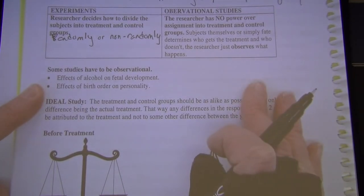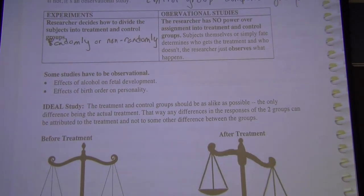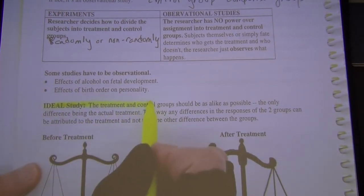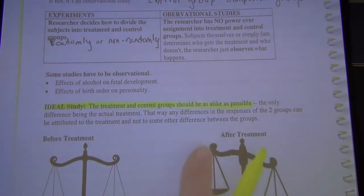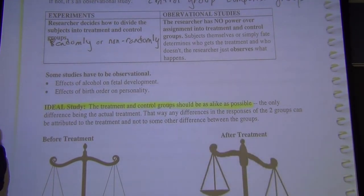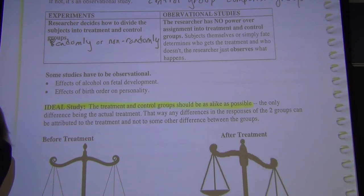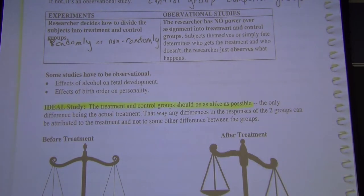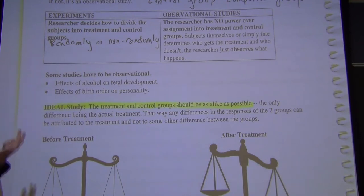The main idea of the ideal study: you want the treatment and control groups to be as alike as possible — ideally identical twins or clones. If we all had a clone, one in the in-person class and one in the online class, comparing them at the end would be ideal. That's what we're aiming for.